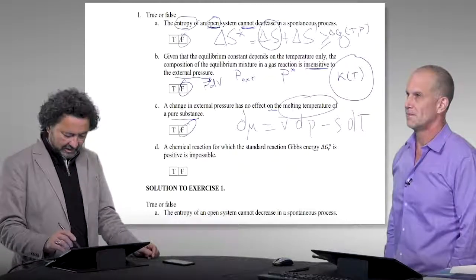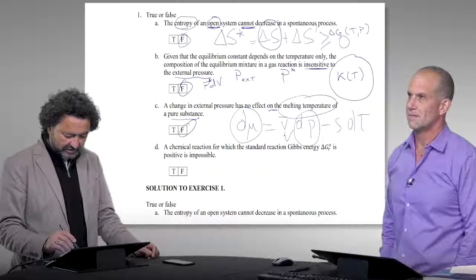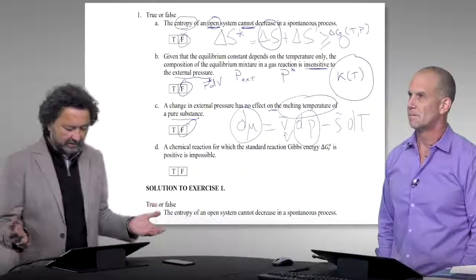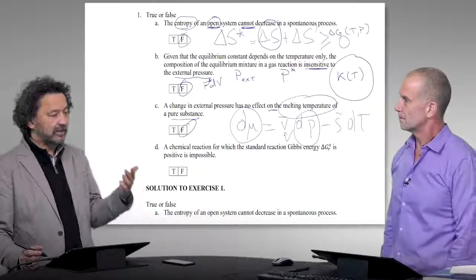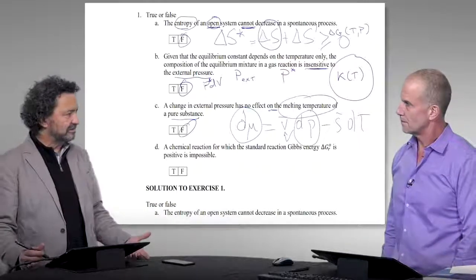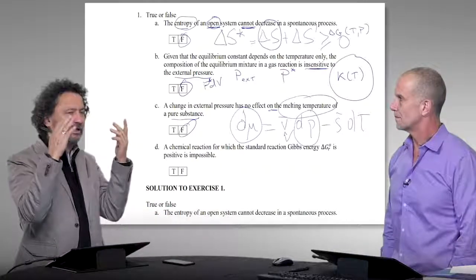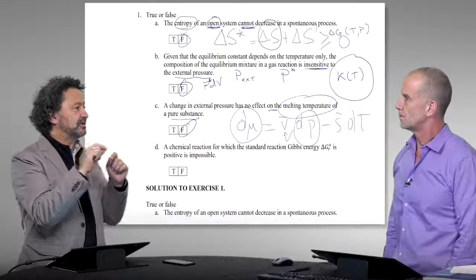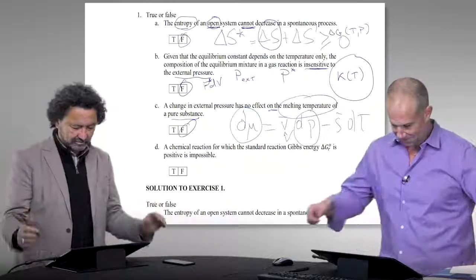If we want to look at this in mathematical terms: change in external pressure will indeed change the chemical potential, and because phase equilibrium is dictated by the equality of two chemical potentials, it will shift. Each time we see a phase equilibrium diagram, a point on an equilibrium line corresponds to a situation in which the chemical potential of two or more substances are equal.